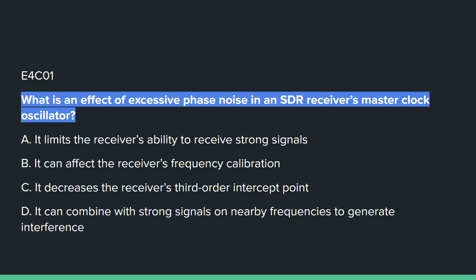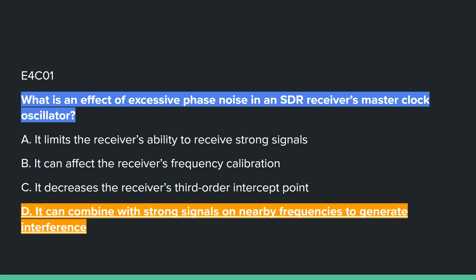E4C01: What is the effect of excessive phase noise in an SDR receiver's master clock oscillator? Answer D: it can combine with strong signals on nearby frequencies to generate interference.